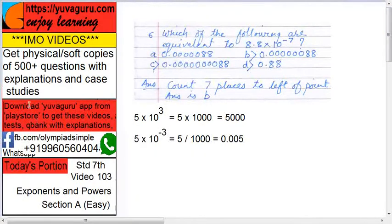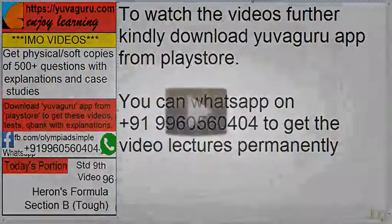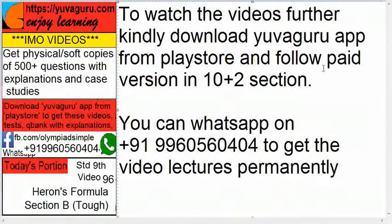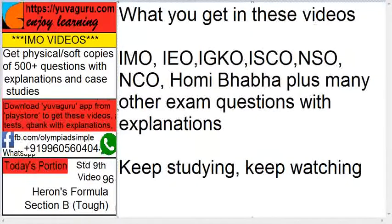Download Yuva Guru app from play store to get this video's test, question banks with explanations directly on your mobile. Get 500 plus questions with explanations and case studies on your PC, it is a separate paid version. Follow us on Facebook on this link, WhatsApp us on this number for any query related to purchases. To watch the videos further, kindly download Yuva Guru app from play store and follow the paid version in 10 plus 2 section. You can also WhatsApp on the number 9960560404 to get the videos permanently on your PC and on your mobile. What do you get in these videos? IMO, IEO, IGKO, ISO, NSO, NCO, Homebaba plus many other exams questions with explanations. So keep studying, keep watching.